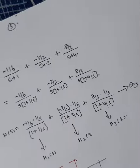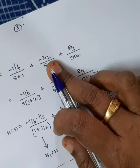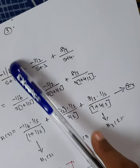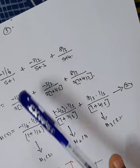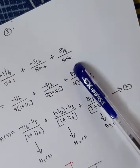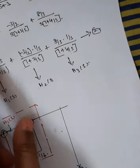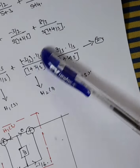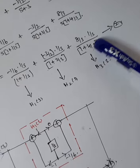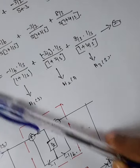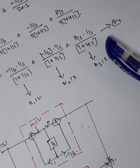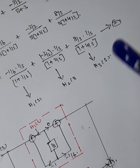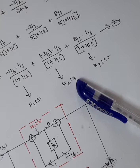Substituting A = -1/6, B = -3/2, C = 8/3 into H(s), then taking s common from numerator and denominator: H1(s) = (-1/6)(1/s)/(1 + 1/s), H2(s) = (-3/2)(1/s)/(1 + 3/s), and H3(s) = (8/3)(1/s)/(1 + 4/s). We now have H(s) in the form H1(s) + H2(s) + H3(s).